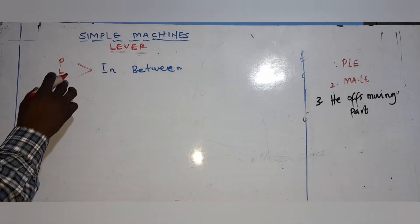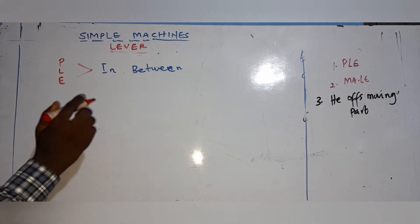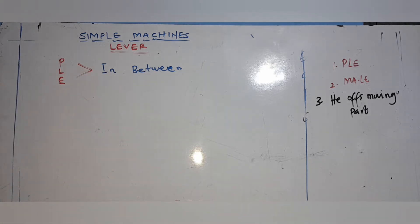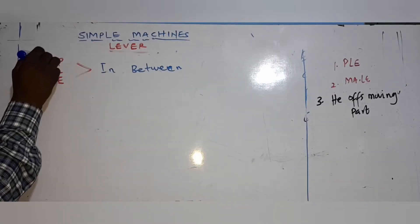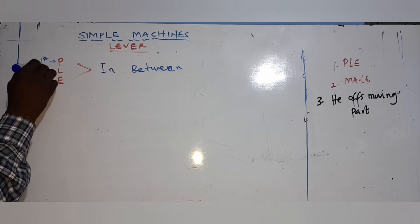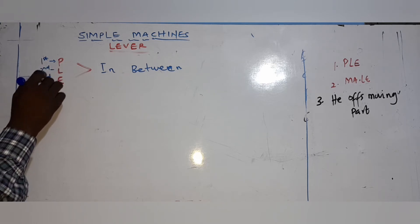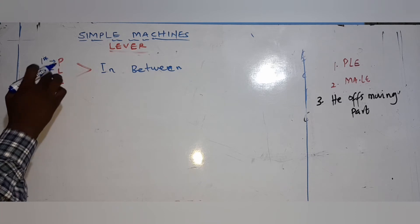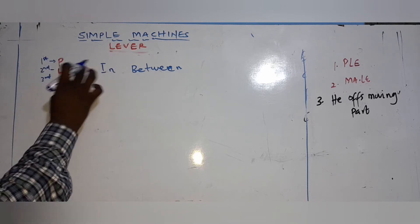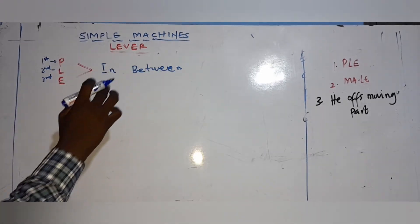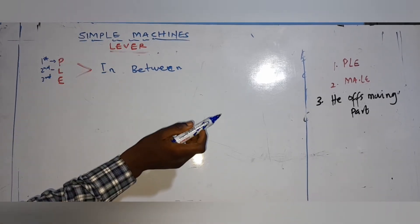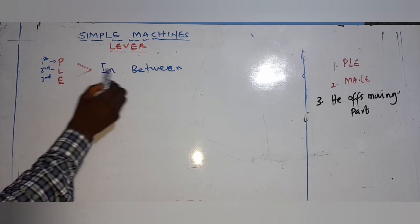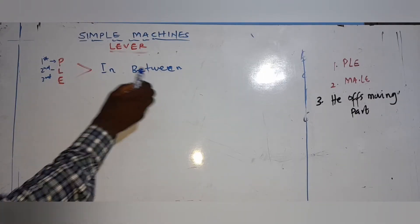So we have three classifications of the lever: first class, second class, and third class. To know the three types, look at the word 'PLE' — Play in Between. For first class, the Pivot is in the middle. For second class, the Load is in the middle. For third class, the Effort is in the middle.